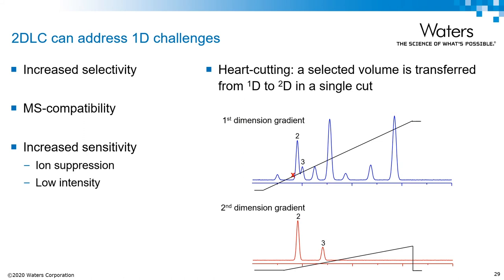This becomes a really nice example of where 2D LC can potentially offer a solution. HAA in the first dimension can offer the desired separation, where TEA-HFIP in the second dimension can provide mass information. There's been a pretty steady increase of 2DLC use across the pharmaceutical industry, driven by several factors: we can increase selectivity by using orthogonality in our first and second dimensions, increase resolution for highly complex samples, enable MS compatibility for methods which are not compatible with MS, and increase sensitivity for analytes facing ion suppression or those that need to be removed from complex matrices.